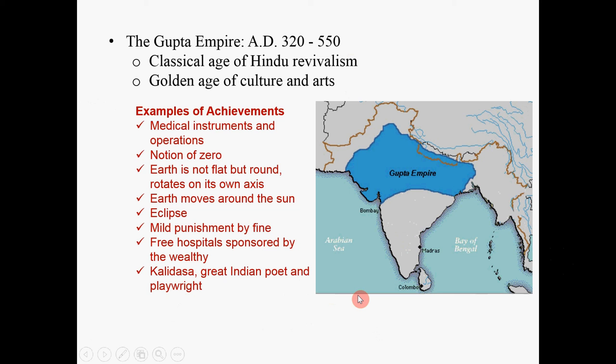After the death of Ashoka, the Maurya Empire quickly collapsed, and different parts of India practiced a variety of religions, with Buddhism being predominant. Until we see the rise of the Gupta Empire, which marks the revival of Hinduism. Since that time, the dominant religion in South Asia again became Hinduism, and this period was also regarded as the golden age of culture, arts, and development.